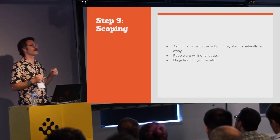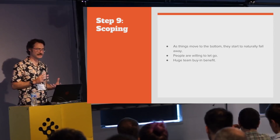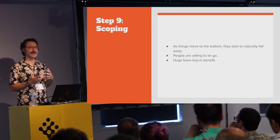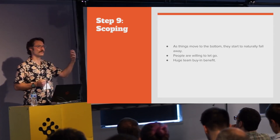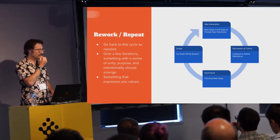Step nine: scoping. As you move through all of this, cards will naturally sort of move down in priority. As they get to the bottom, people become willing to cut them, because when you deal with the game holistically people begin to understand the scope of things and how they connect. Those priorities and cuts start to seem pretty reasonable, and there's a huge benefit for team buy-in for people to go through the experience of arguing over ideas, seeing them move down, and finally agreeing to let them drop off the end.